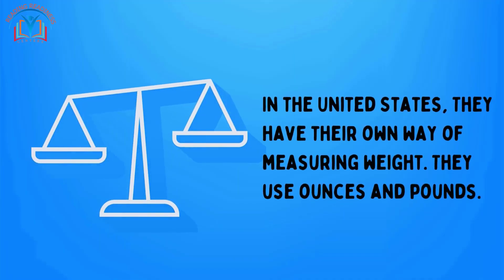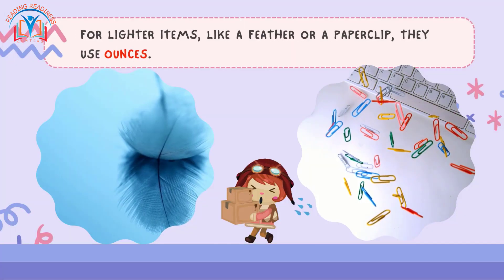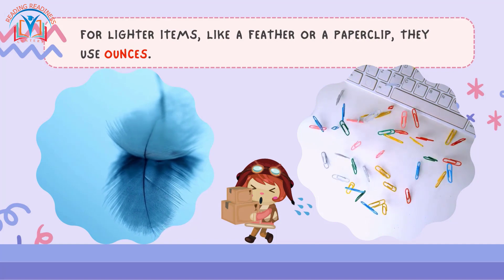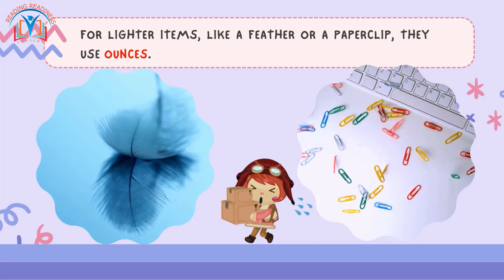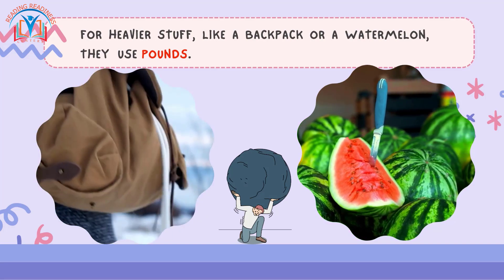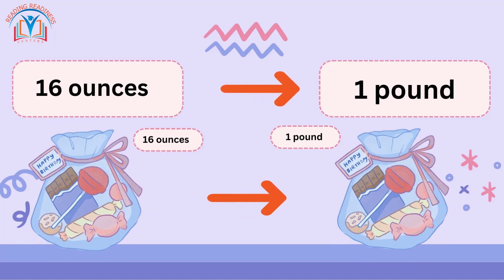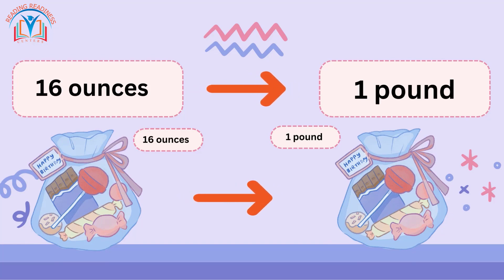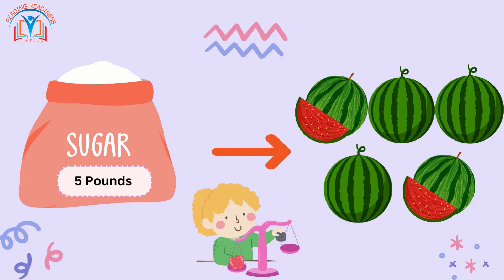They use ounces and pounds. For lighter items like a feather or a paperclip, they use ounces, and for heavier stuff like a backpack or a watermelon, they use pounds. Here's a cool trick: there are 16 ounces in one pound. So if you have 16 ounces of candy, you've got yourself one pound of candy! Now imagine a bag of sugar that weighs five pounds — that's like lugging around five big watermelons.